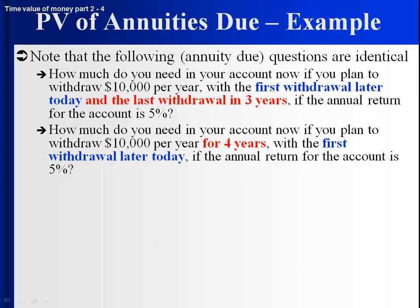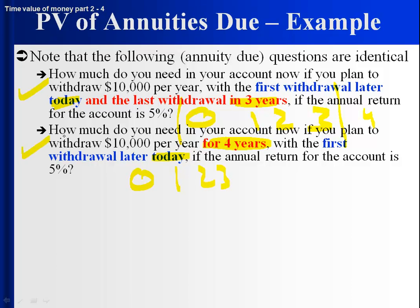Finally, just a little language help. These two annuity due questions are identical. The first says: how much do you need in your account if your first withdrawal is later today and the last is in three years? So you have today, one year, two years, and three years — that's four payments. Or, if it says for four years and the first one is later today, you know today, one, two, three gets you four. In the first example you're given the starting and the ending and you figure out the number; in the second, you're given the starting and the number and you figure out the ending.